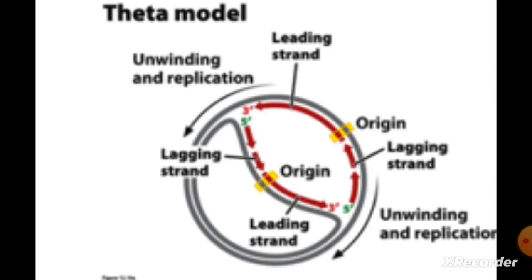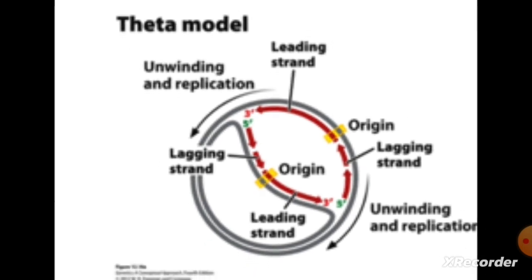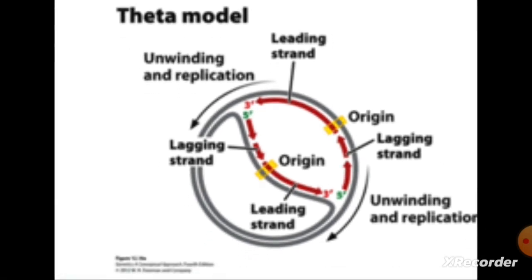The first evidence came from E. coli in 1963 from Cairns' autoradiography experiment. Radioactive tritiated hydrogen thymidine was taken up over months. As atoms decay, they emit electrons visualized as dark grains on an autoradiograph. This pattern takes the shape of the classical circular theta. Cells labeled for two generations showed continuous lines of dark grains, and results showed replication can be bidirectional.